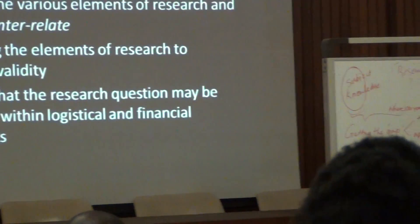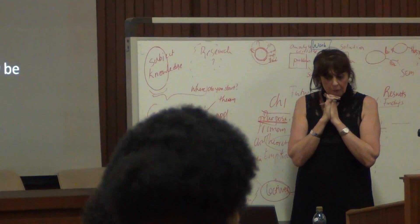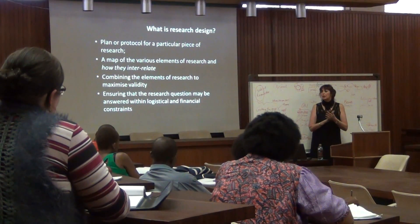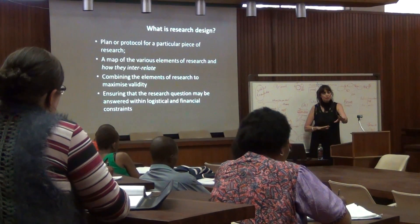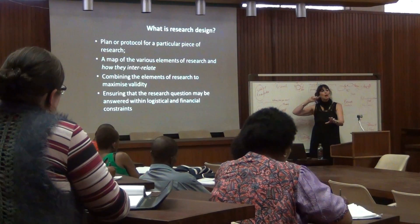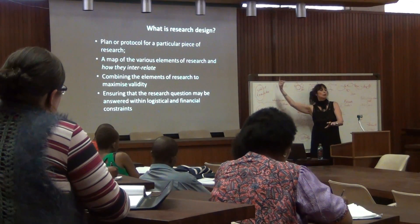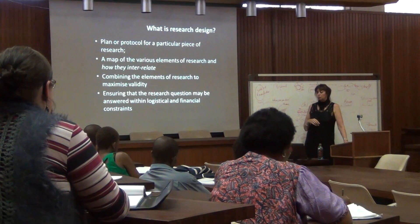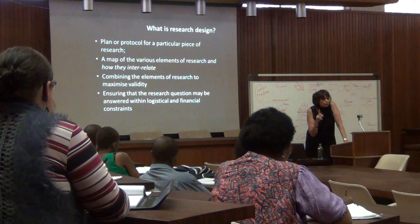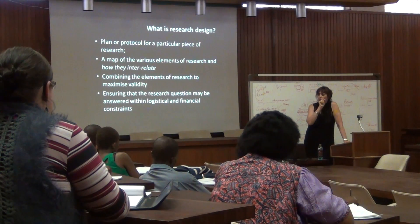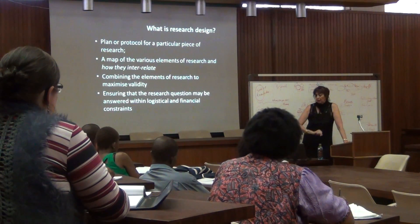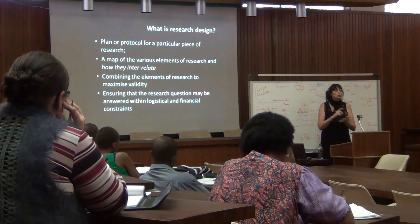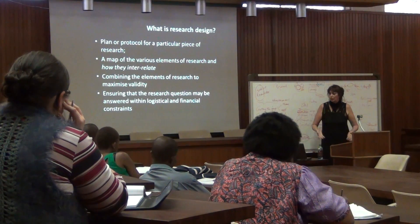Here are some definitions. Research design is the plan or protocol for a particular piece of research. It's a map of how the various elements are interrelated — it tells you which are the elements. Every item in a research proposal becomes a chapter or part of a chapter later. Combining the elements will give you maximum validity. Validity makes sure that you keep on topic, that you are studying what it is that you want to study. It ensures that the research question can be answered in a logical way given all the resource constraints you might have: financial, time, etc.